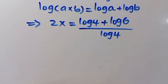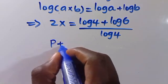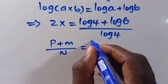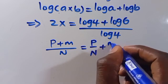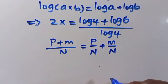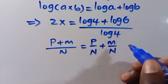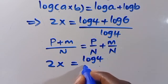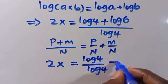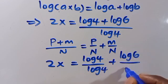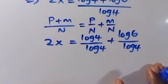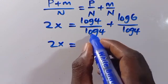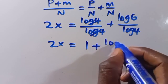Recalling that when we have (p plus m) over n, where p, m, n are constants, we can write this as p over n plus m over n. Likewise here, log 4 is a constant, so we can split the fraction: 2x equals log 4 over log 4 plus log 6 over log 4, which gives 2x equals 1 plus log 6 over log 4.